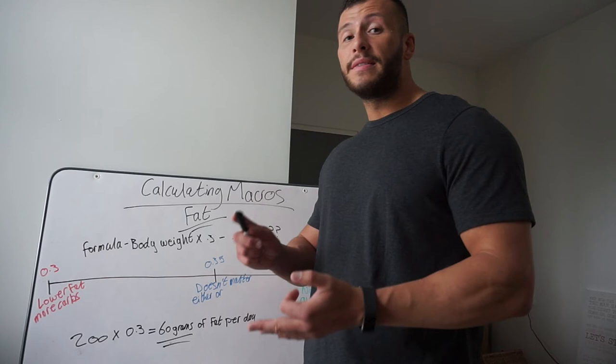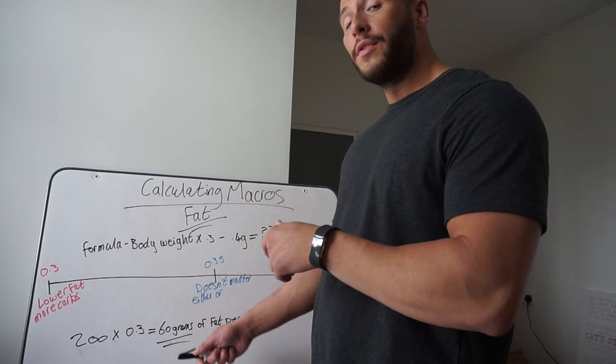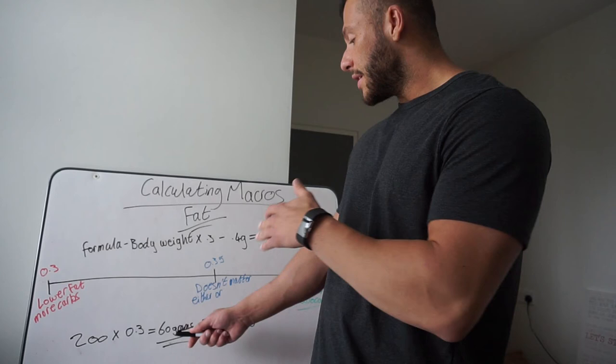Okay, so we're going to take 200 pounds, multiply by 0.3 because our client likes a higher carb diet with less fat. That's going to give us 60 grams of fat per day. That's how much fat they're going to consume while they're on their diet.